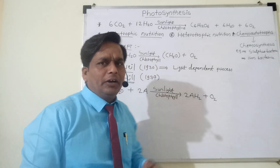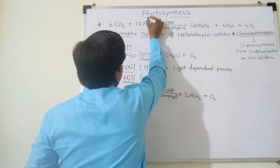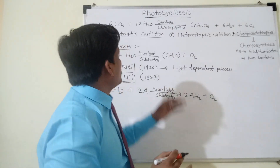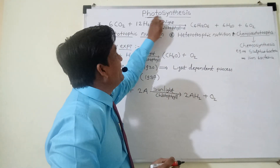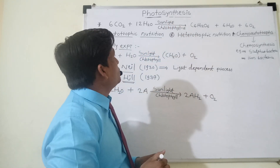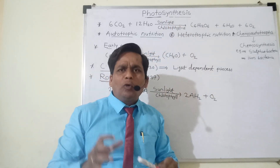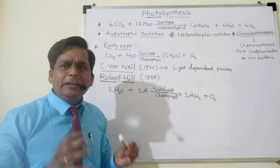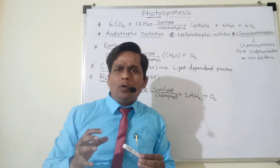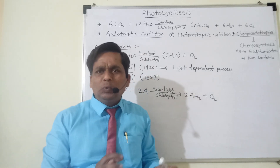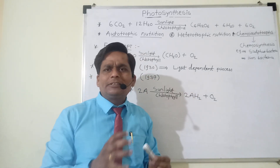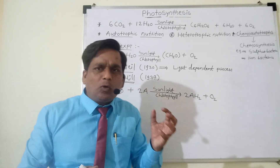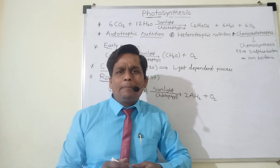Photosynthesis is a Greek word. Photo means light and synthesis means to prepare. Photosynthesis means the green plants prepare food with CO2 and water in the presence of sunlight and chlorophyll — it forms glucose molecules and oxygen is evolved as the byproduct.